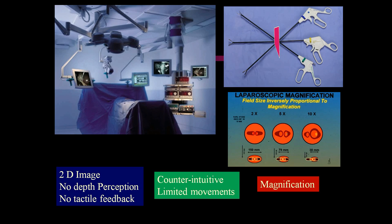For example, with the camera, if you want to see the right side, you need to bring the camera to the left. If you want to see up, we should bring our hand down. So it is a counterintuitive movement, but somehow we slowly start learning the skill.